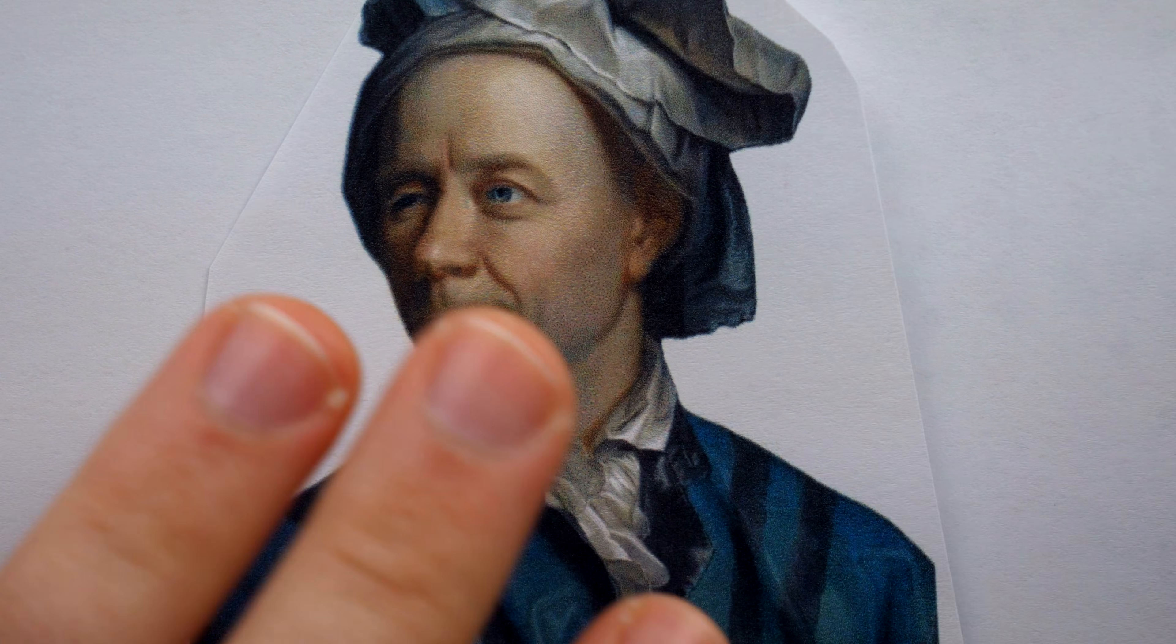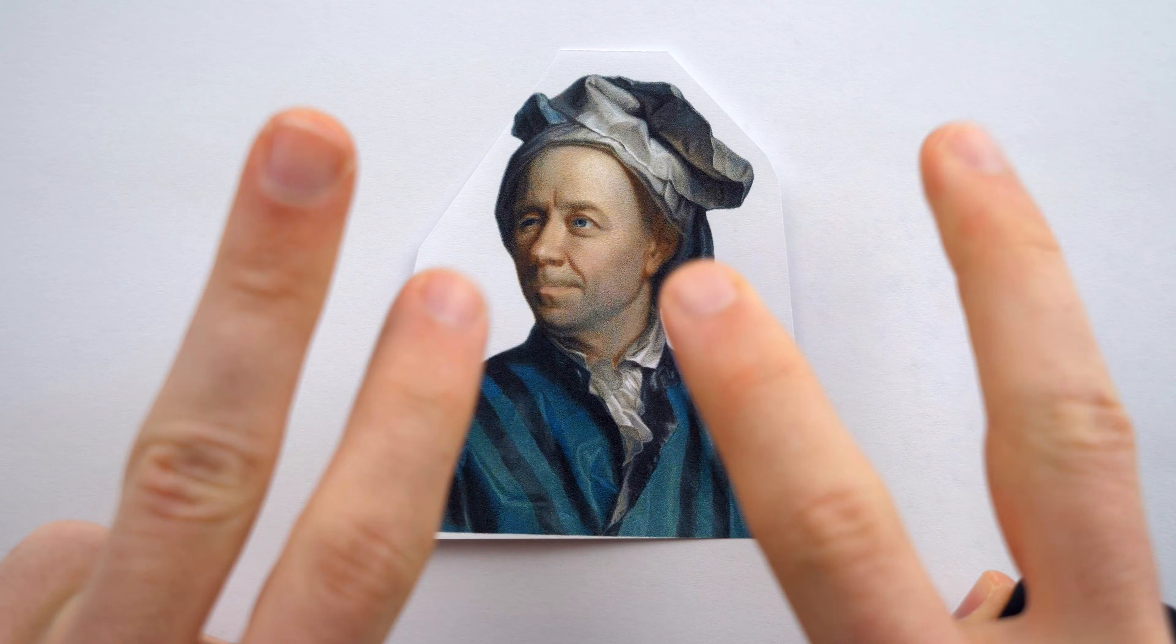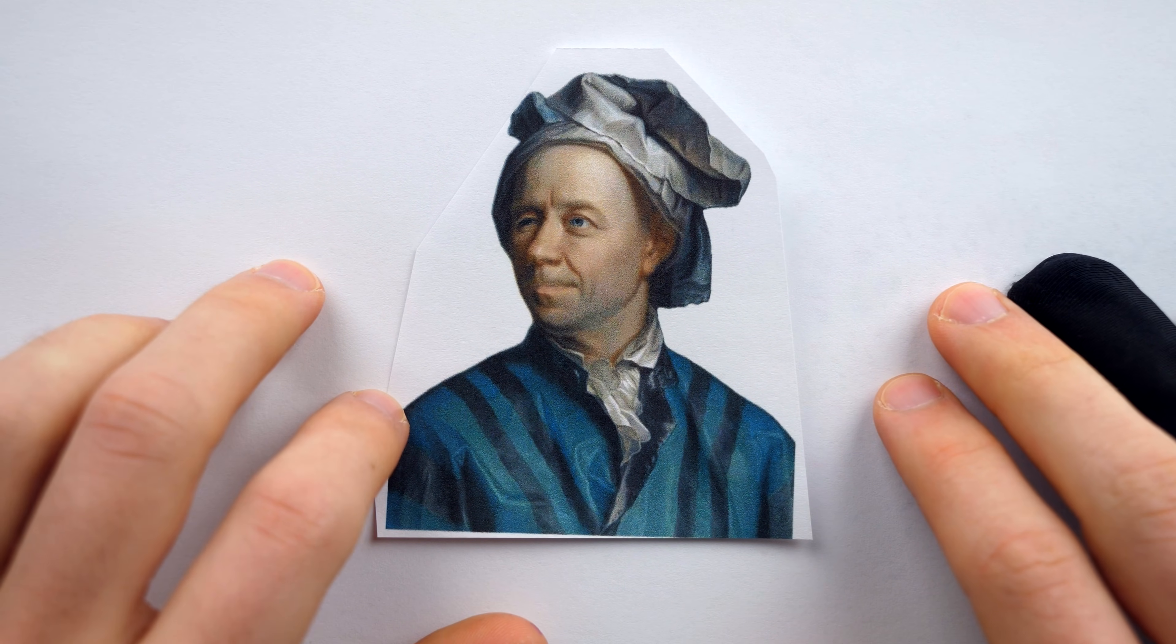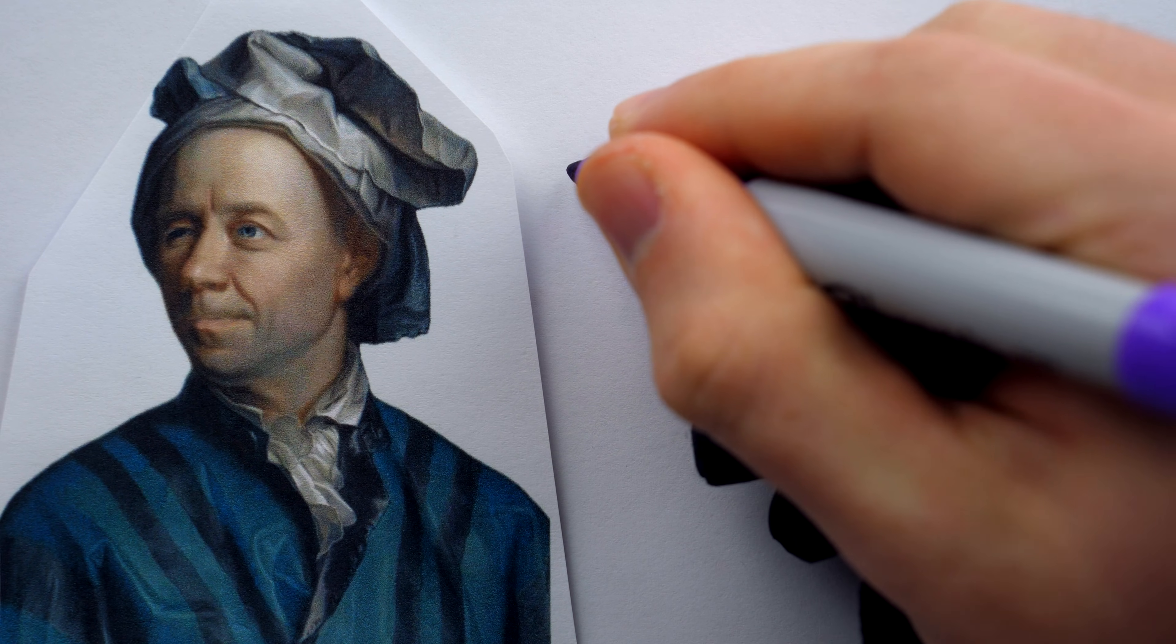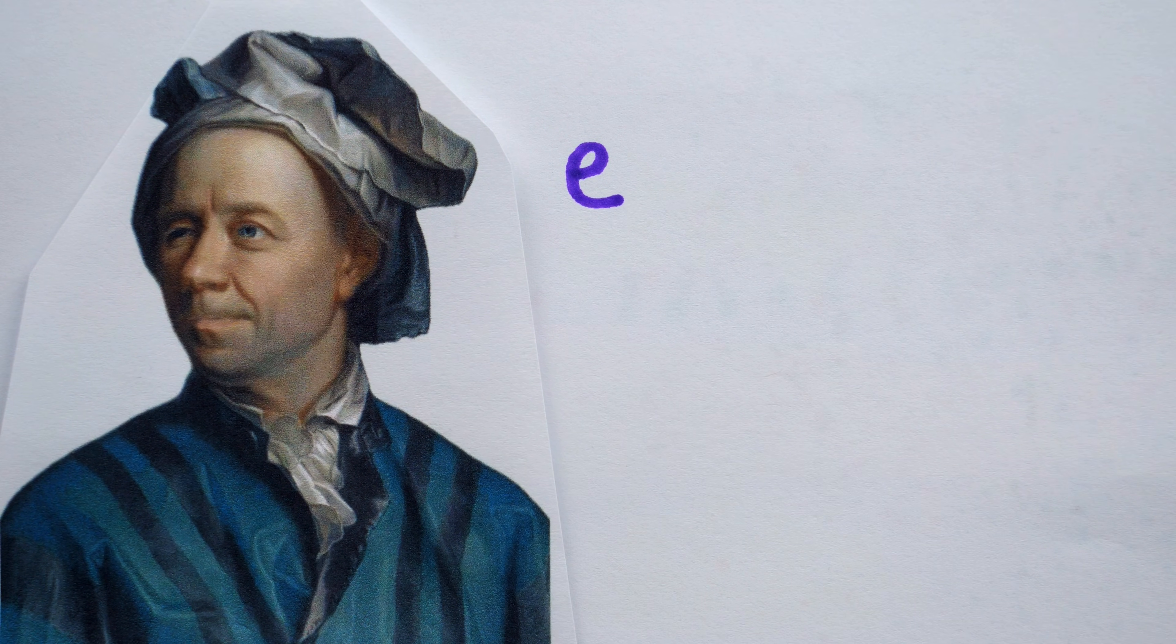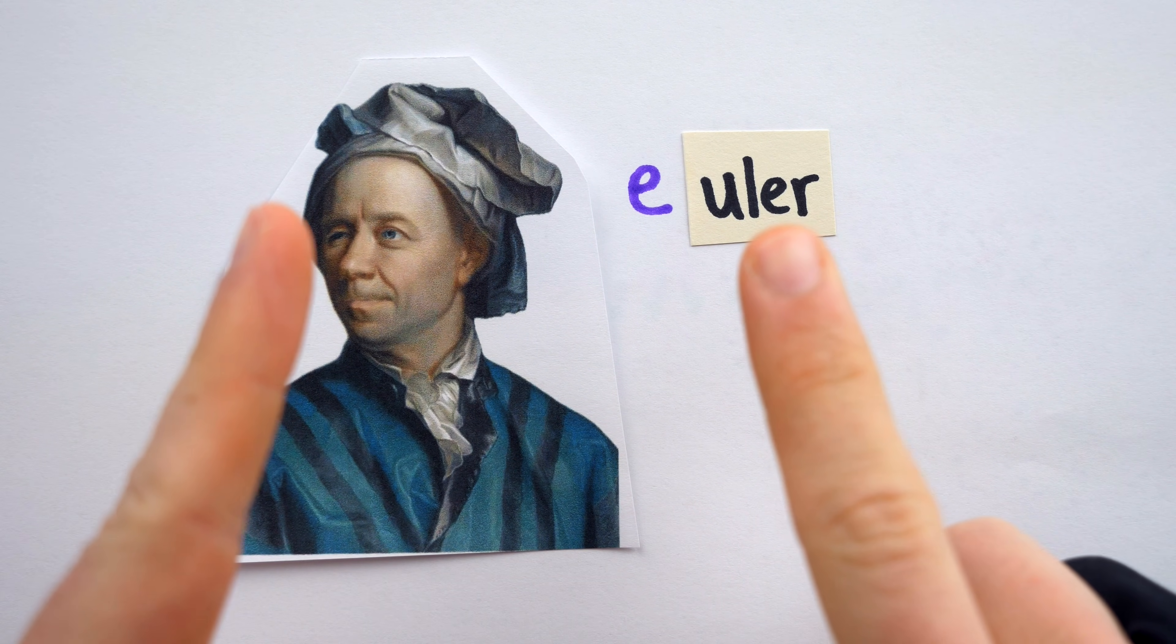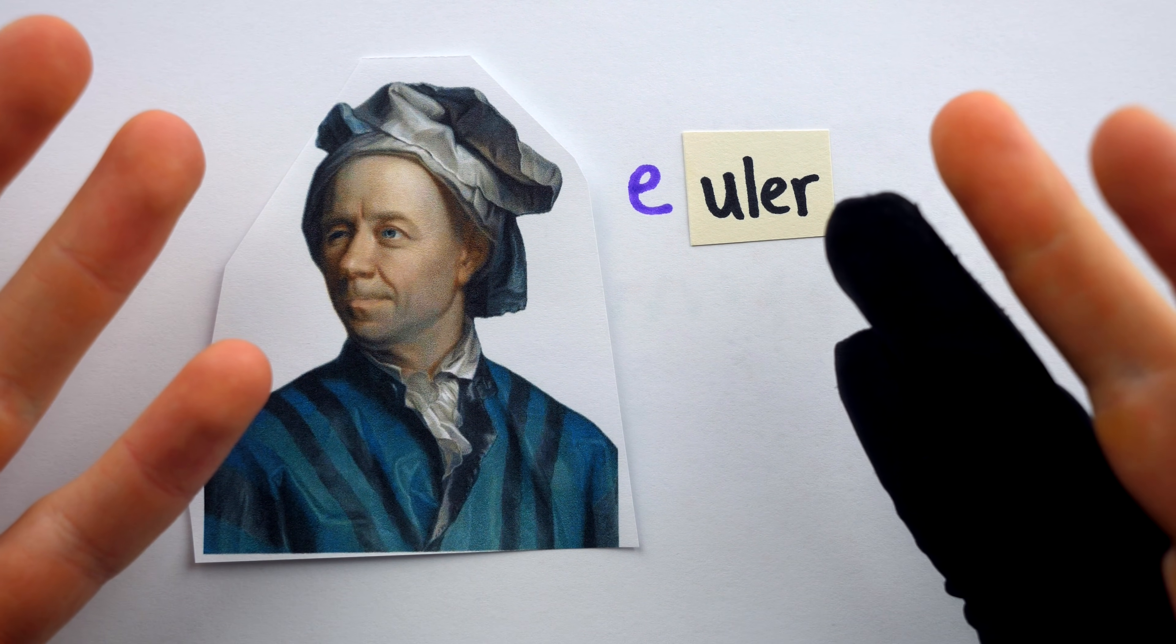A final argument may be that while Euler didn't call the base of the natural logarithm E to honor himself, future writers might have. It could have been a combination of carrying on tradition, but also choosing E as a token for Euler. And to that, I say that's a fair point, but I'm happy to concede it now that I've got to talk to you about the history of math notation for the last 12 minutes.